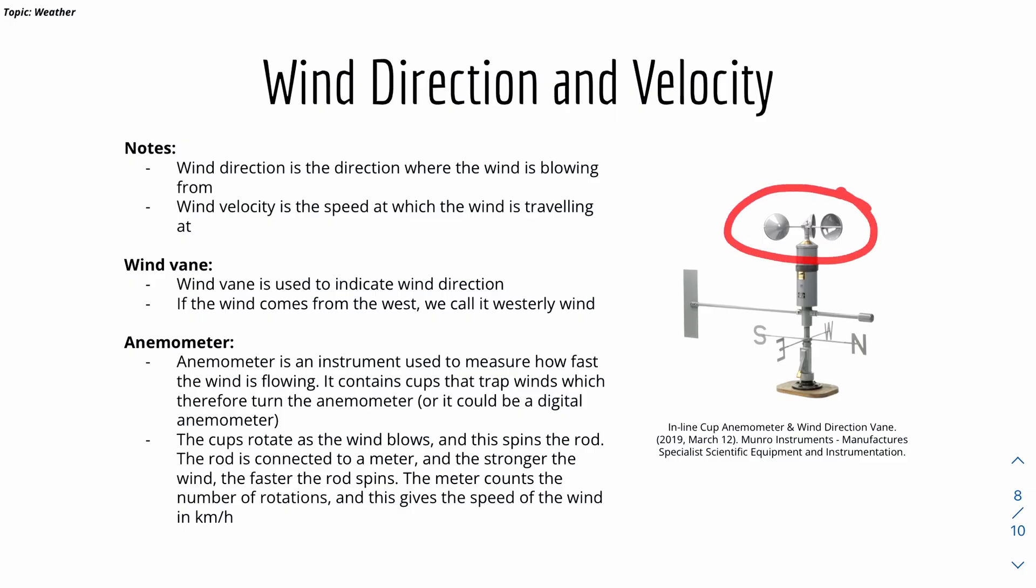It typically uses cups like this to trap wind, which will therefore turn the anemometer. So it will basically turn. As the cups turn, it will spin the rod, which is basically connected to a meter, which will give a reading on the number of rotations, which then will be converted to wind speed.